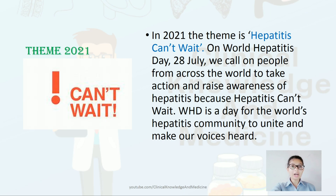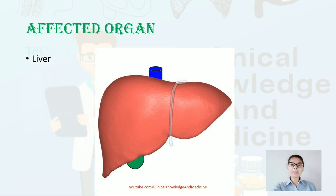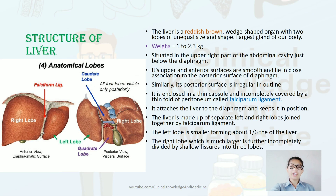The affected organ in hepatitis is the liver. The liver is a reddish-brown, wedge-shaped organ with two lobes present — right and left. It is also the largest gland of our body, weighing 1 to 2.3 kg. It is situated in the upper right part of the abdominal cavity, just below the diaphragm. Its upper and anterior surfaces are smooth and lie in close association to the posterior surface of the diaphragm.